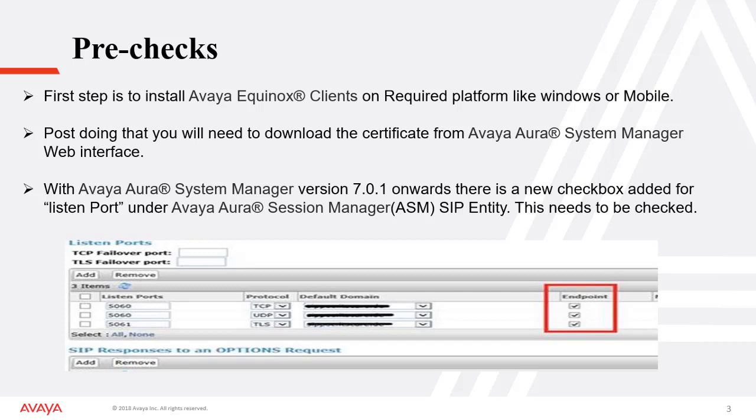Pre-checks before beginning. First step is to install the Avaya Equinox Client on the required platform, like Windows or mobile platform. After doing that, you will need to download the certificate from the Avaya Aura System Manager web interface. With Avaya Aura System Manager version 7.0.1, there is a new checkbox added for listen port under Avaya Aura Session Manager SIP entity. This needs to be checked.